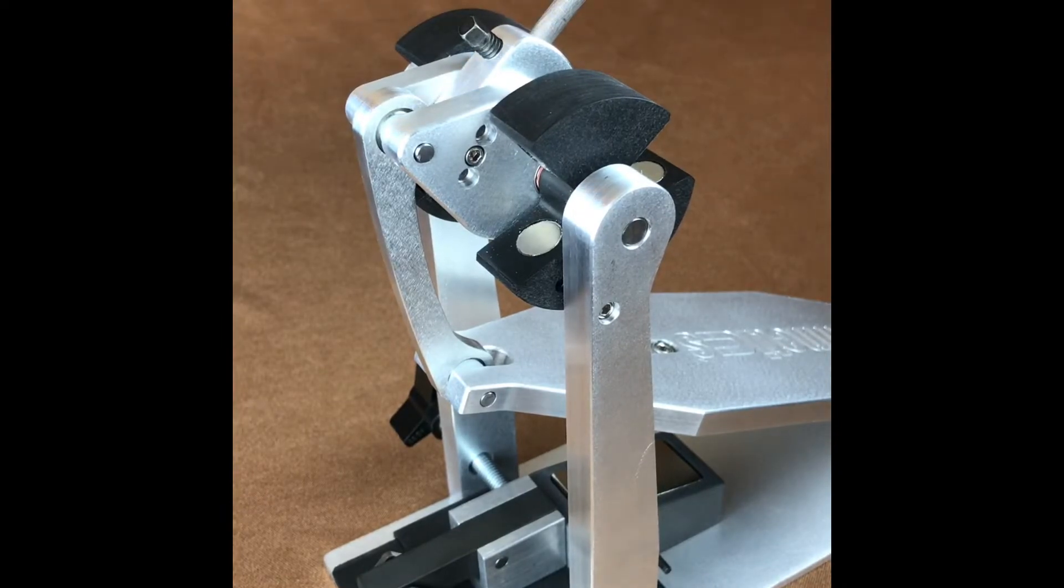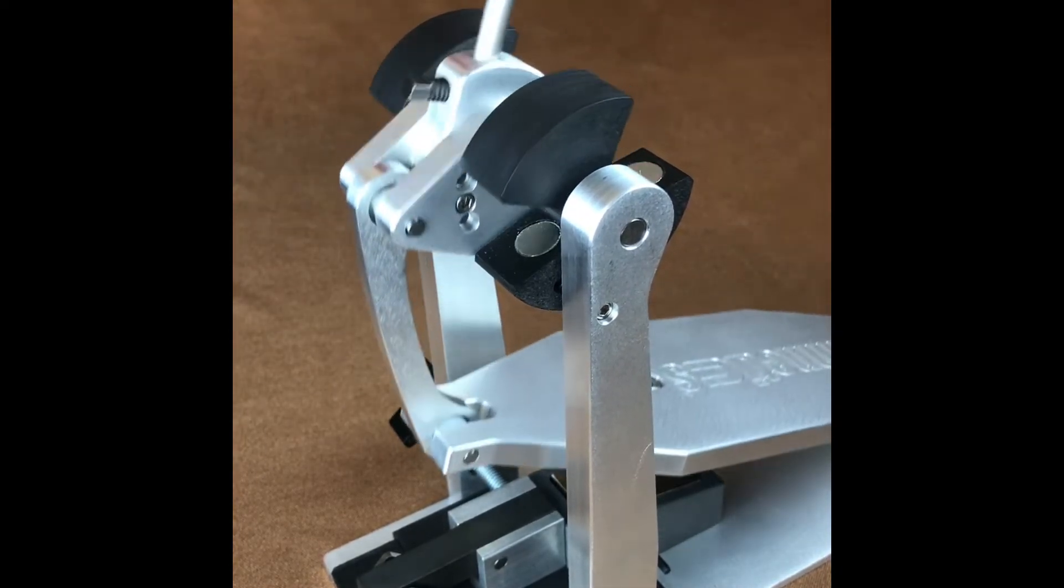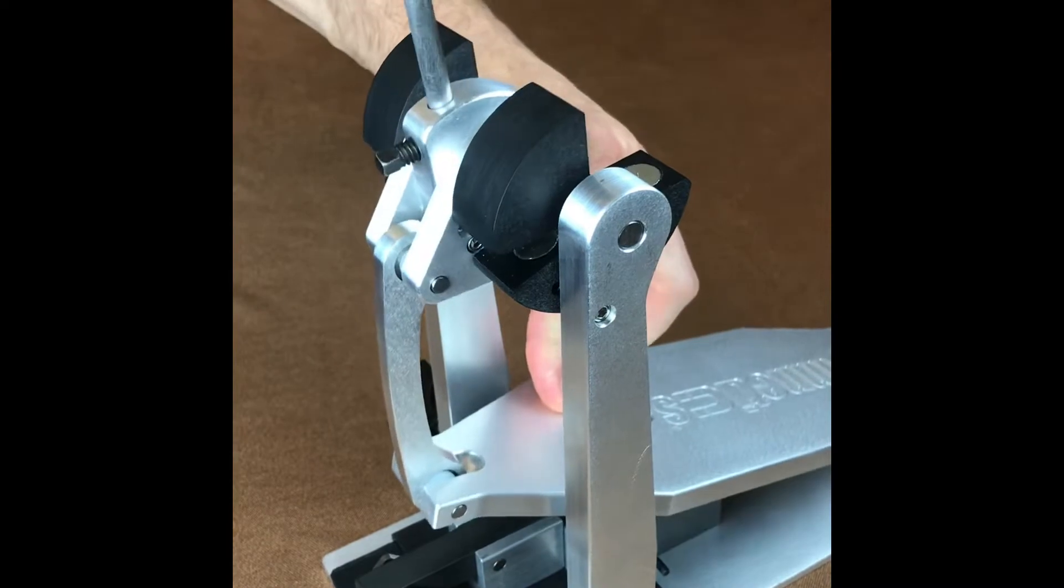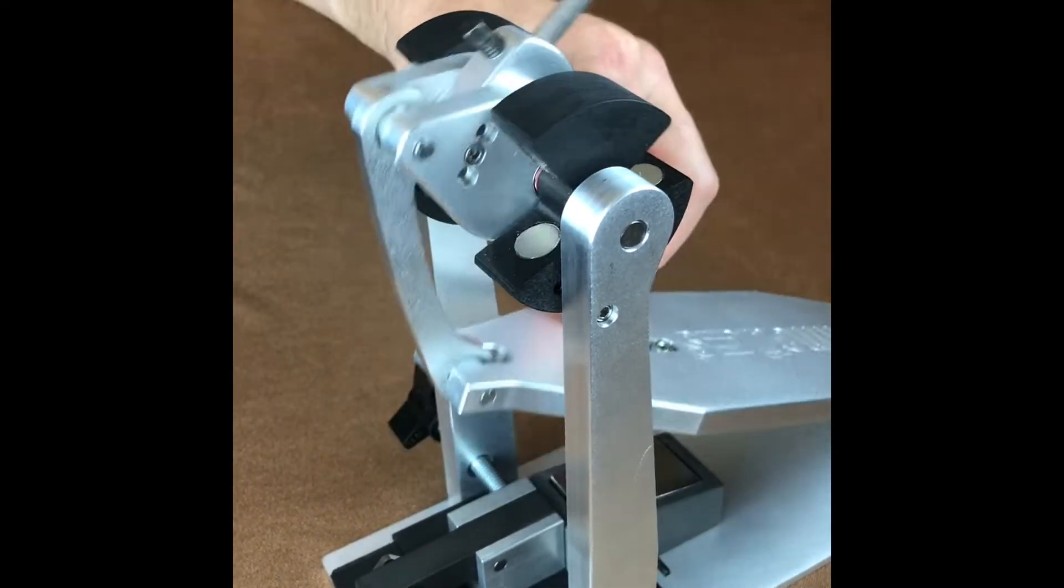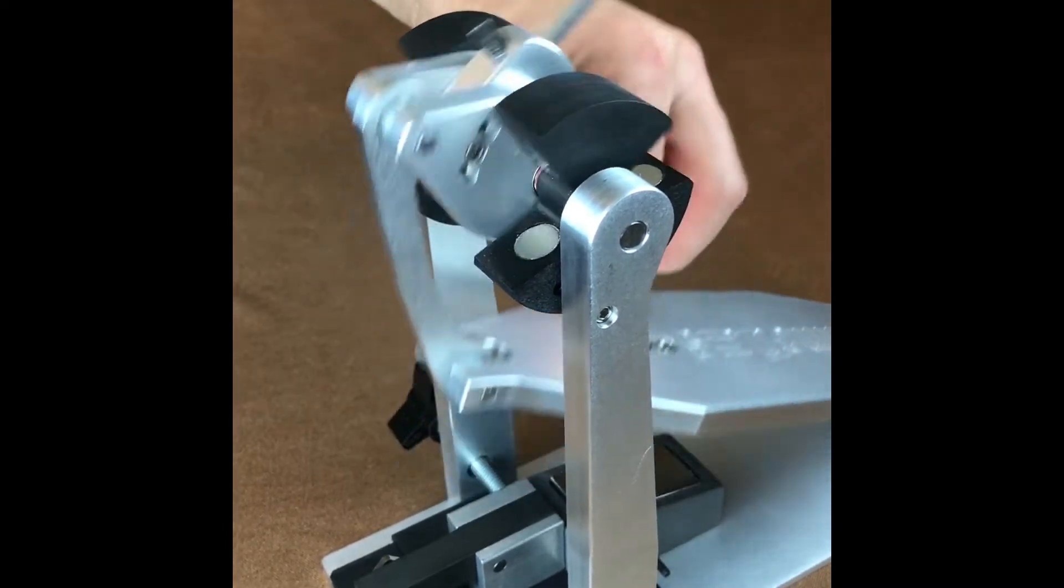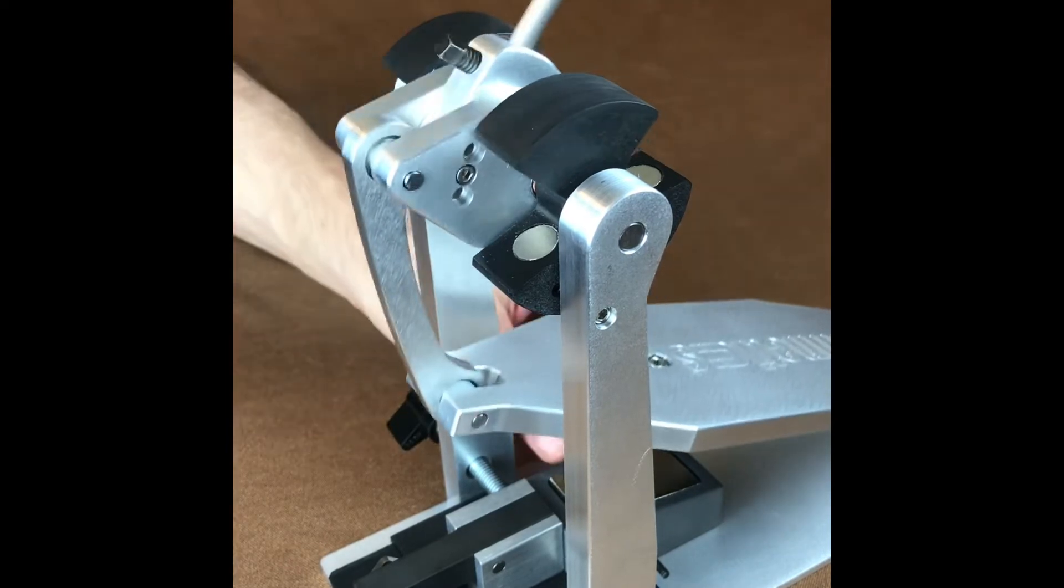Your Drumnetics pedal comes factory set as seen here with the beater placed in the center of the three beater angles available on the cam assembly, which puts the bass drum beater at an approximate 45 degree angle away from the bass drum head, which may or may not be to your preference.